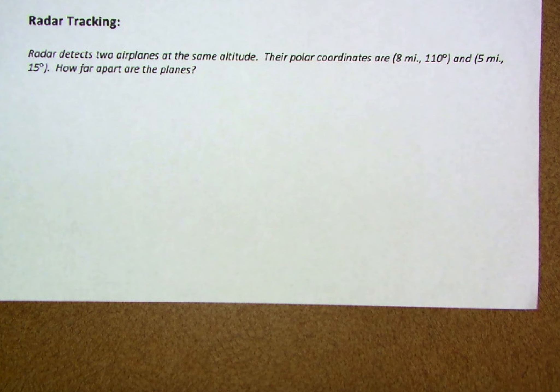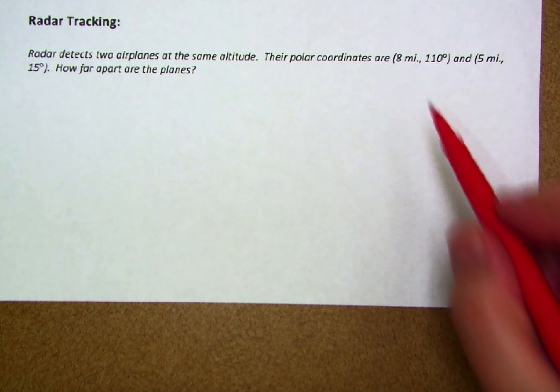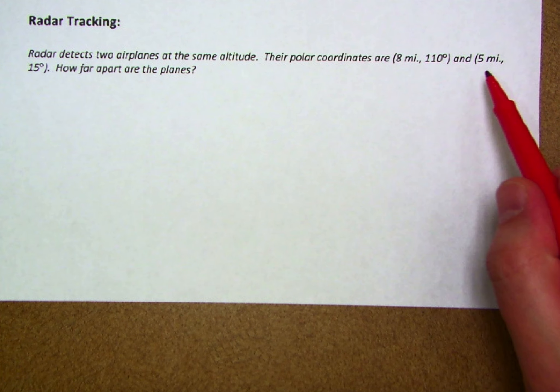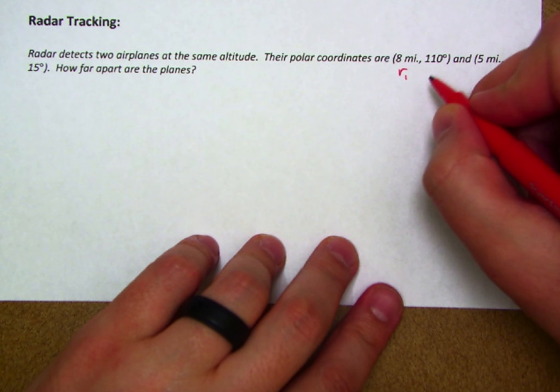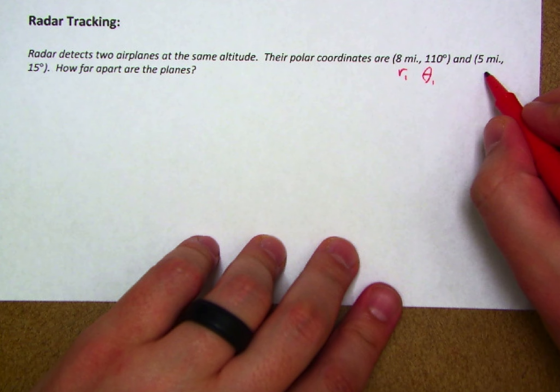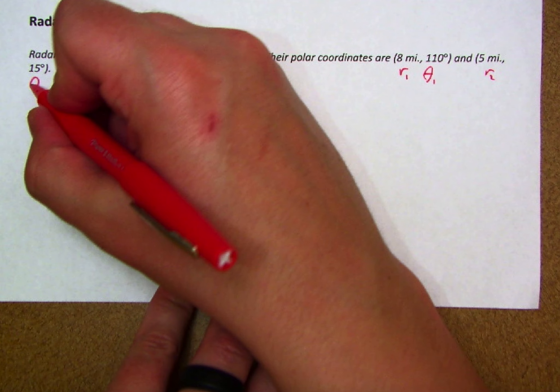Let's wrap things up with our radar tracking problem. Radar detects two airplanes at the same altitude. Their polar coordinates are 8 miles, 110 degrees, and 5 miles, 15 degrees. We could refer to this as R1 theta 1 and R2 theta 2.